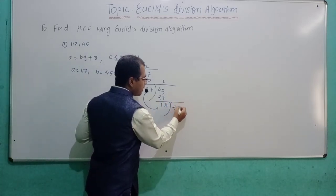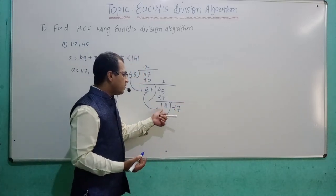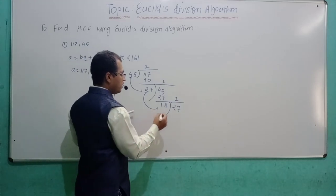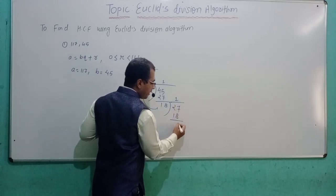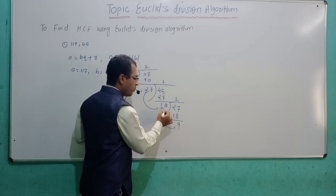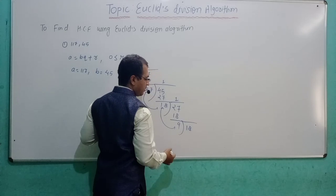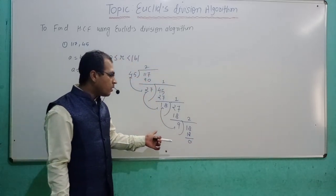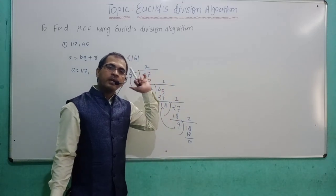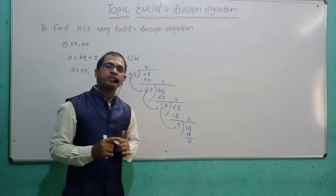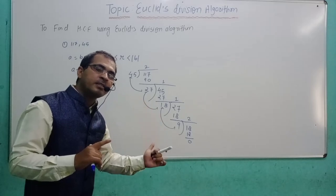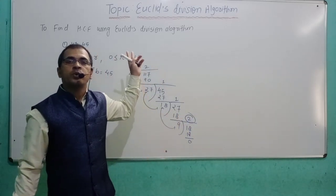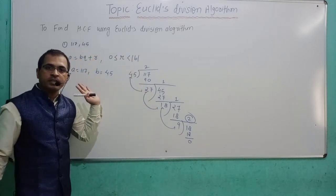Now 27 will be divided by 18. Read the table of 27 — 18 goes one time into 27. Subtracting: 27 minus 18 gives 9. The same process: 9 divides 18. 18 divided by 9 goes 2 times with remainder 0. Finally, we got our desired result 0. In Euclid Division Algorithm, you continue this process until the remainder is 0. The previous remainder before 0 is the GCD of the two integers.